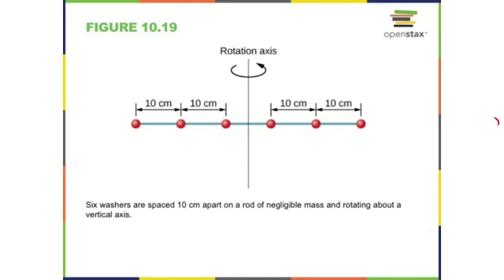Six washers are spaced 10 centimeters apart on a rod of negligible mass rotating about a vertical axis. Find the rotational inertia if each washer has a mass of 10 grams. You calculate the inertia for each washer and add them up. That's why we always write I as sigma(m·r²). Take the mass of each one, multiply by the square of its radius, get all six values, and add them.